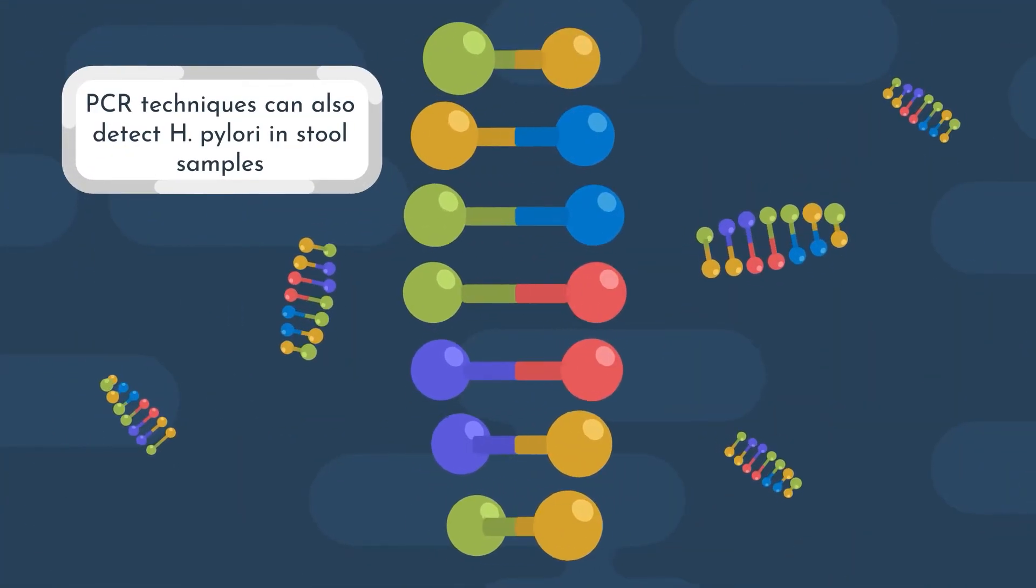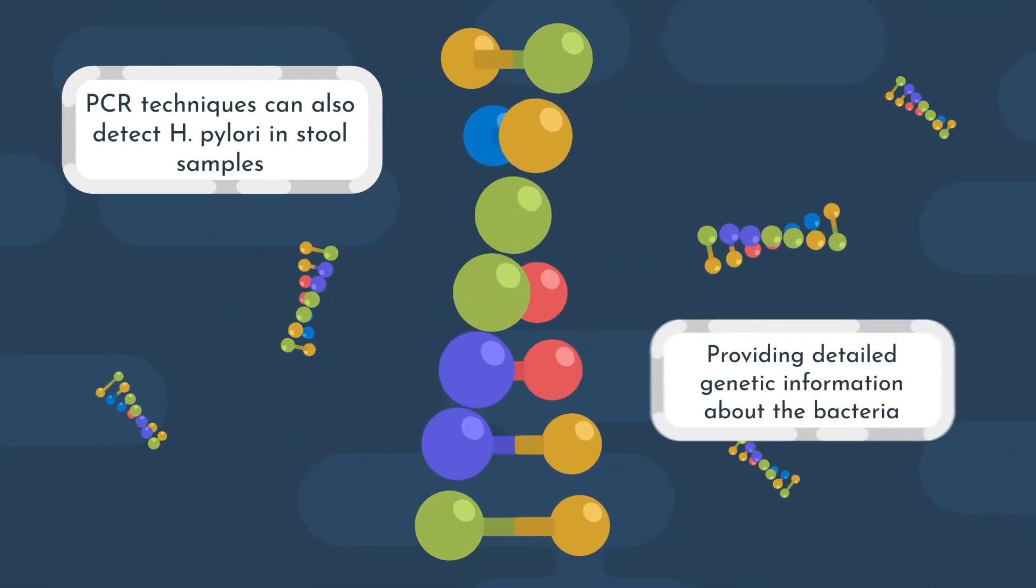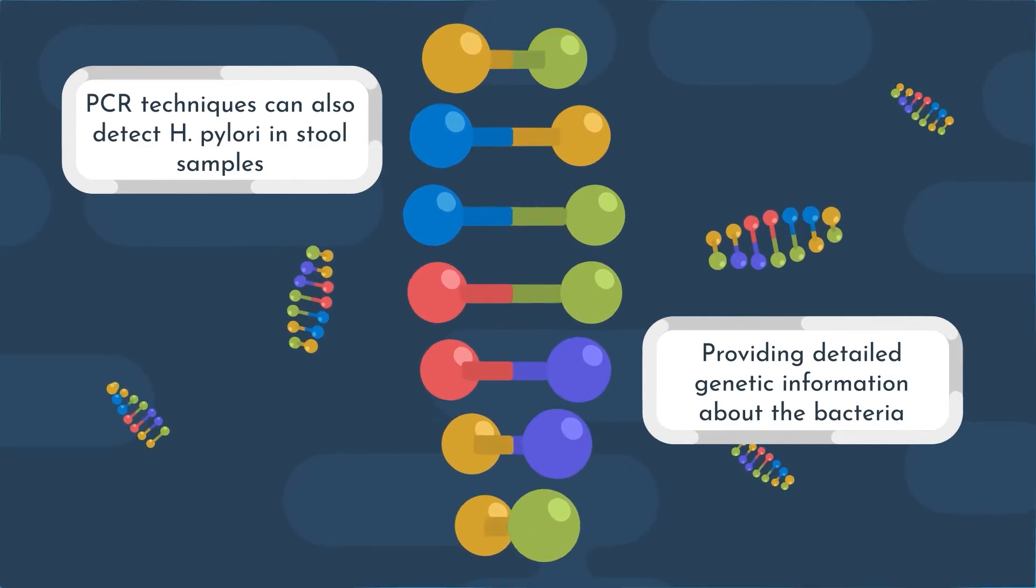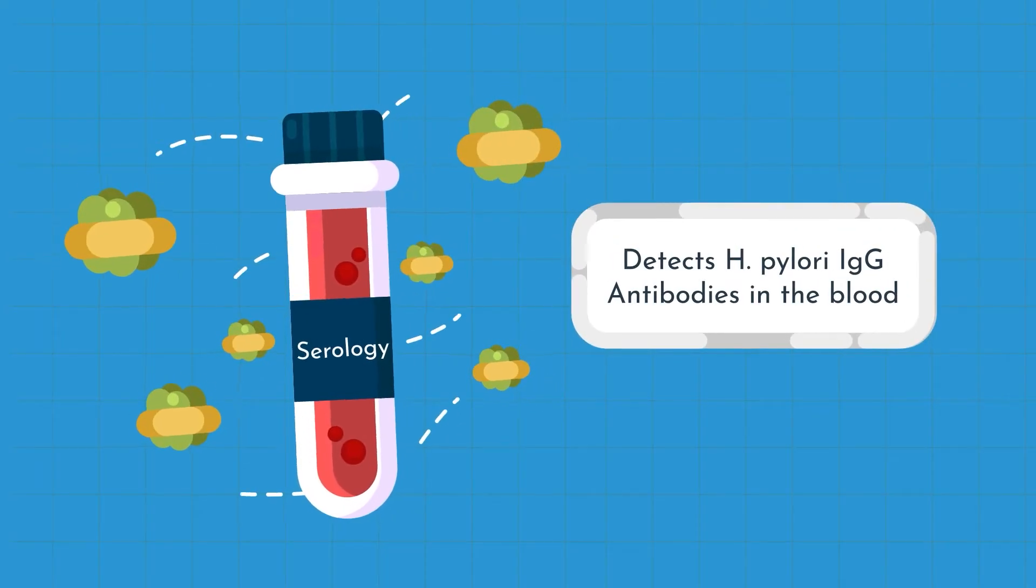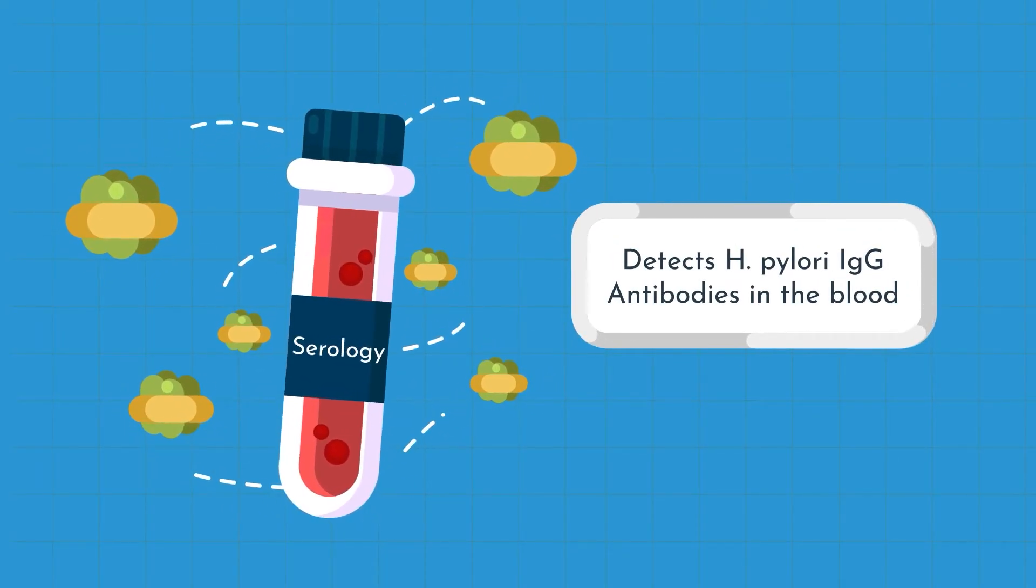PCR techniques can also detect H. pylori in stool samples, providing detailed genetic information about the bacteria. Serology tests detect anti-H. pylori IgG antibodies in blood.